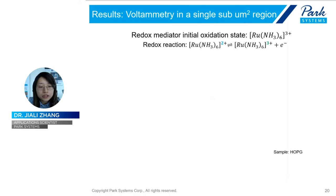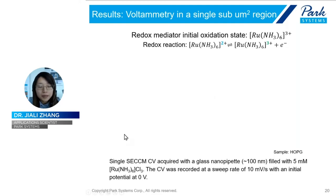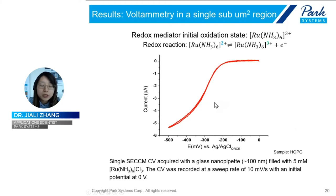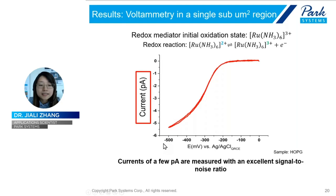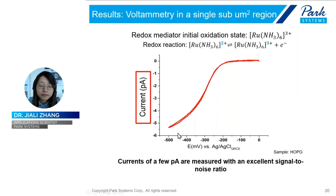Cyclic voltammetry of the ruthenium hexamine reaction was run on an HOPG surface at a scan rate of 10 millivolts per second. The final results show a typical SECCM CV obtained for the reduction of ruthenium hexamine. The smooth sigmoidal wave shape observed is characteristic of a CV acquired in the SECCM format, corresponding to a near-steady-state or thin-layer diffusion regime. The limiting current measured here is negative 5.3 pico-amperes. This small current magnitude demonstrates the power of Park System's low-noise current amplifier.